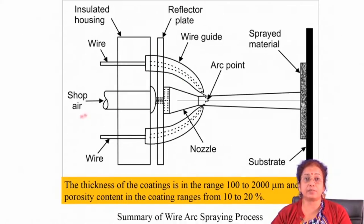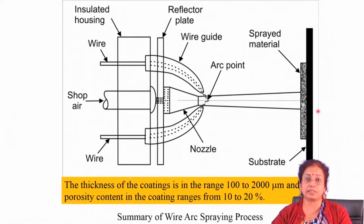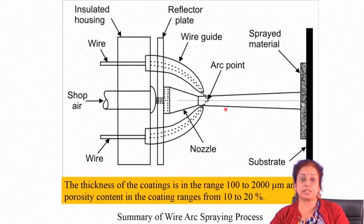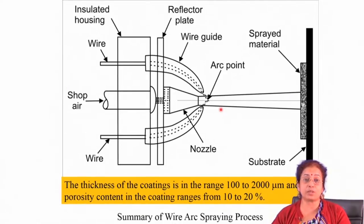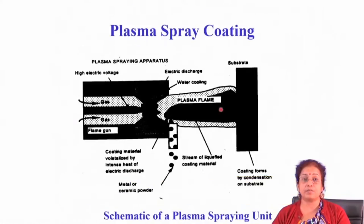Other parameters include the velocity of the air or inert gas used for propelling, the distance between arc generation and the substrate, and the coating material being used. These parameters determine coating quality. The coating thickness is typically in the range of 100 to 2000 microns, and the coating possesses significant defects — particularly porosity varying from 10 to 20 percent, similar to flame spraying.